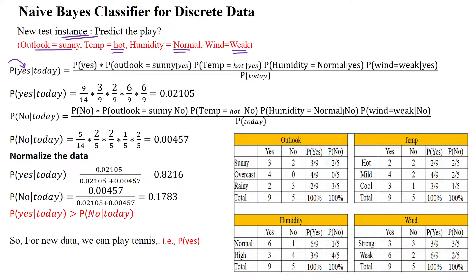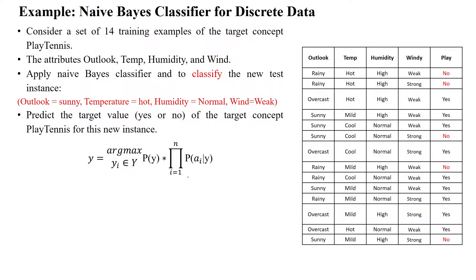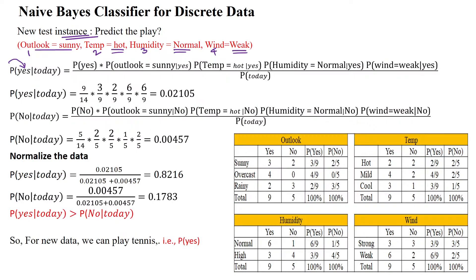We need to find the probability of playing the game (yes) and the probability of not playing the game (no). There are four features: outlook (1), temperature (2), humidity (3), and wind (4). For all features, as per the Naïve Bayes equation, we identify the conditional probability values for each feature given class Y.